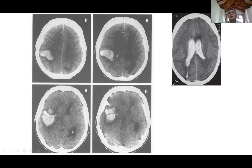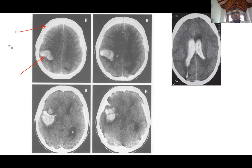Here is a CT film related to intracerebral hemorrhage. You can see a blood clot very clearly. In a CT film, the skull appears very white because it is radio-opaque — CT uses X-rays. The brain is radiolucent, so it appears a little bit dark. There is a clear contrast between the skull and the brain.